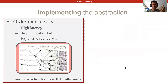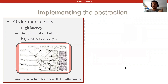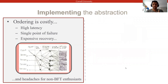First, to construct the totally ordered ledger, we need to run Byzantine-fault-tolerant agreement protocols between all replicas that usually require several round trips of message exchanges. Second, they rely on a dedicated leader to act as a sequencer. And third, they usually have expensive recovery protocols that also notoriously give BFT a reputation for being too complex.